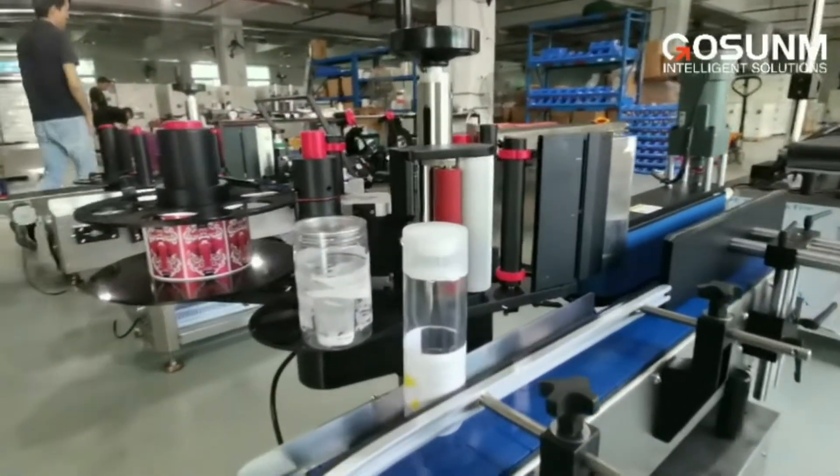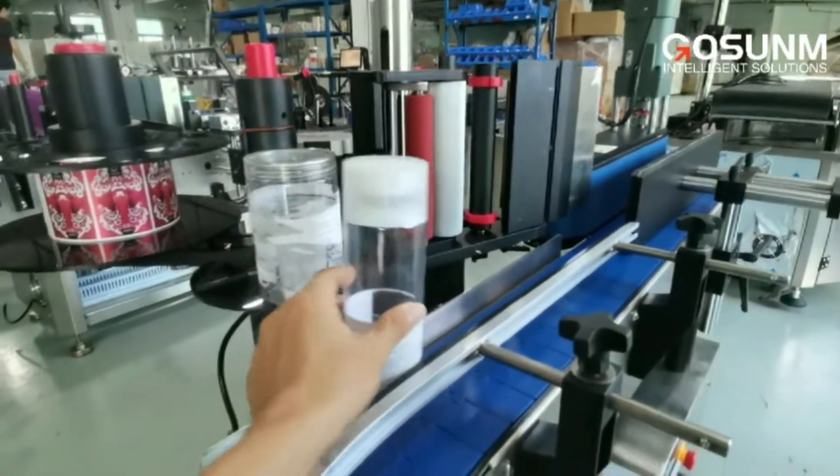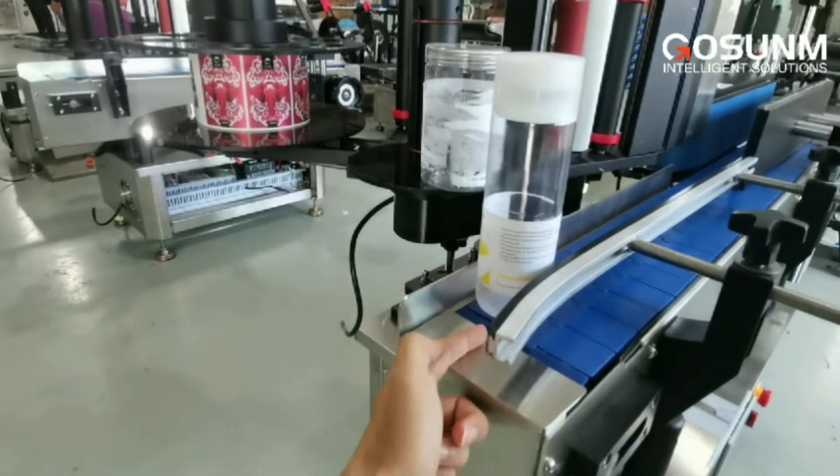So when you start to do the labeling, just put the labels at the entrance of this conveyor belt.